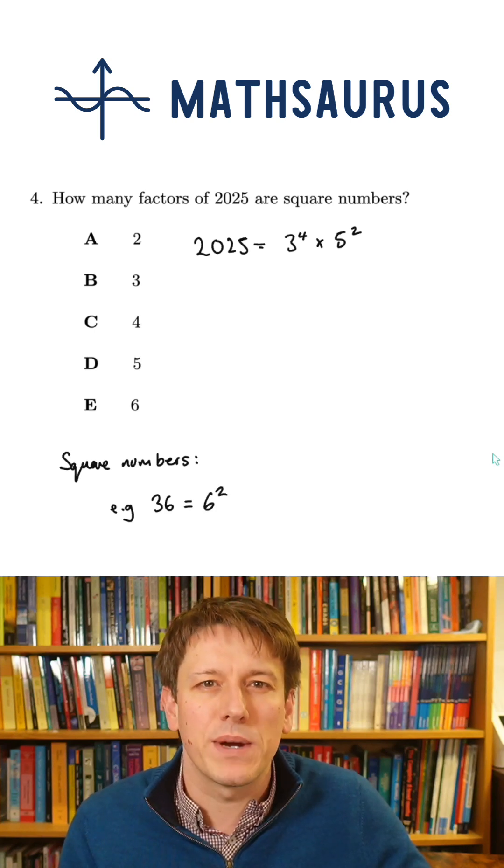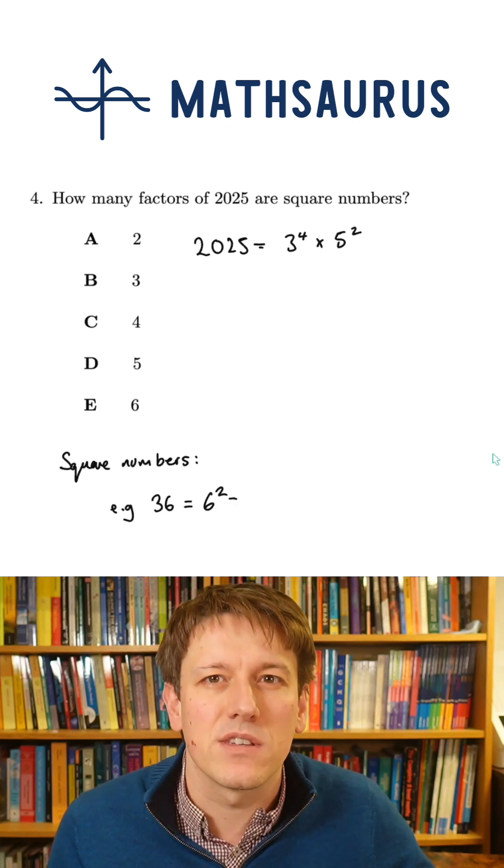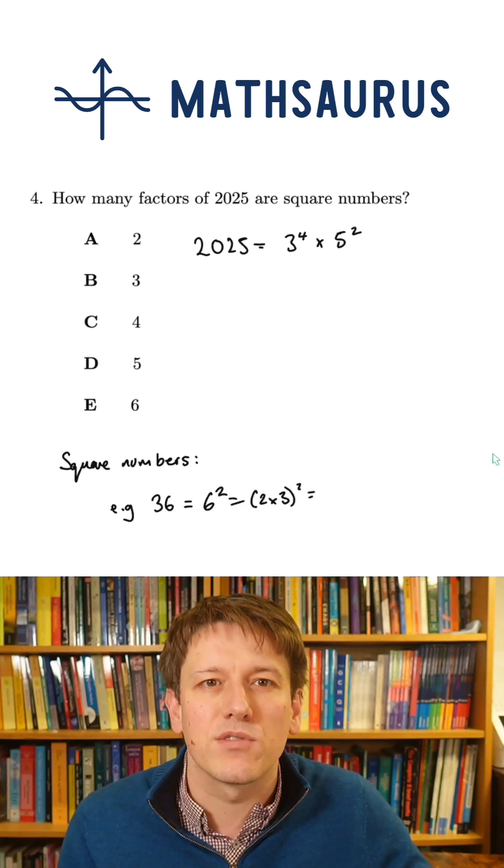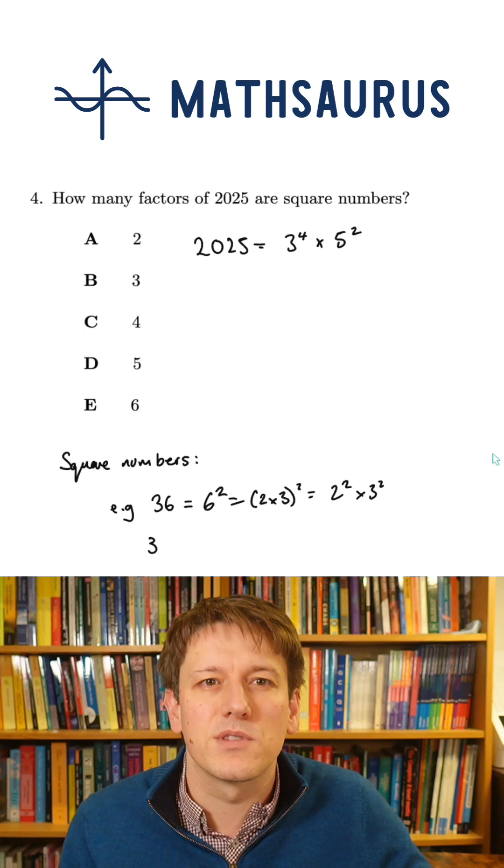But to get a square number, let's think about what we need. For example, 36 is a square number. It's not a factor of 2025, but it equals 6 squared, which is 2 times 3 squared, so that's 2 squared times 3 squared.